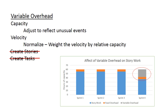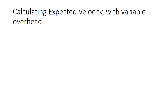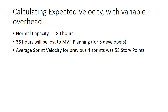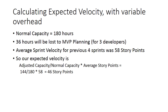Teams want to understand how many story points they should attempt for a given sprint, and to do that we need only account for the variable overhead. Assuming the standard capacity, already discounted for fixed overhead, is 180 hours, and this sprint will lose 12 hours each for 3 developers — 36 hours total — with an average velocity of 58 story points, we calculate expected velocity by taking this sprint's capacity (180 minus 36 hours), dividing it by the standard capacity, and multiplying by the average velocity, which yields 46 story points.